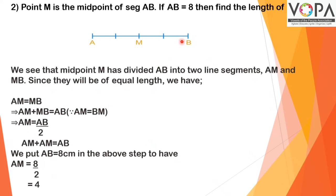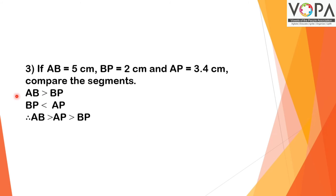AM + AM = AB, that is AM + MB = AB. So AM = AB/2. Therefore AM + AM = AB. We put AB = 8 in the above step to have AM = 8/2 = 4.